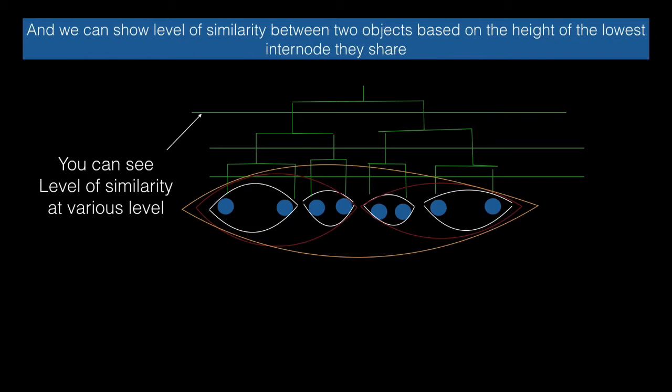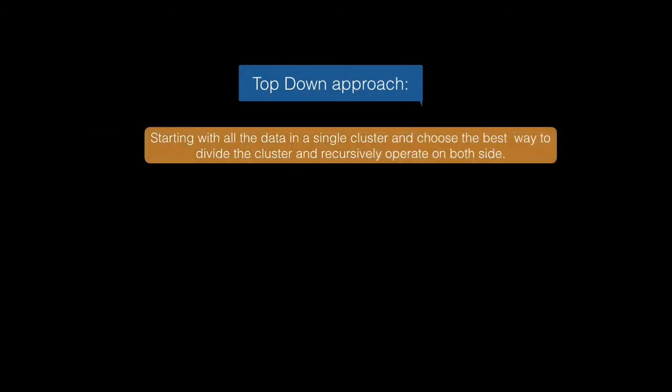In the most top internal node, the similarity between the objects will be the lowest. The similarity in the lowest internal node will be the highest. Now let's see the top-down approach. You have the whole data in the starting—the whole dataset in one cluster.